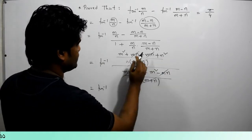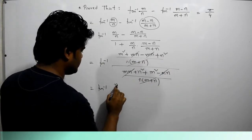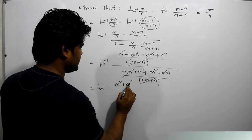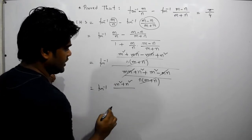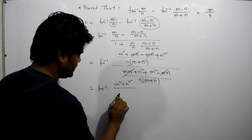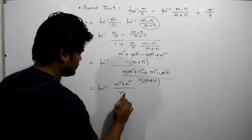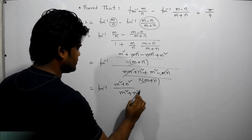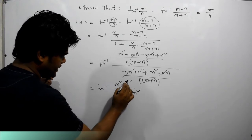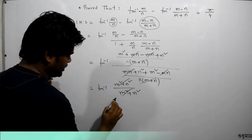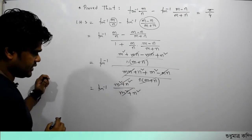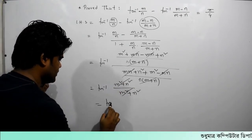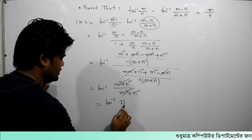What is m squared plus n squared? What is m squared plus n squared divided by m squared plus n squared? These are the same thing — they cancel out, giving us tan inverse of 1.